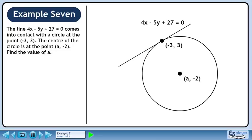The line 4x - 5y - 27 = 0 comes into contact with a circle at the point (-3, 3). The center of the circle is at the point (a, -2). Find the value of a.